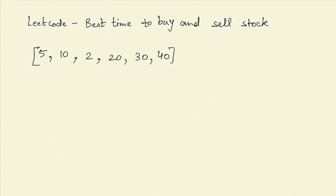Hi everyone, today we are going to discuss the LeetCode problem: Best Time to Buy and Sell Stock. Given an array of numbers representing the price of a stock every day, we have to find the maximum profit by buying and selling a stock if we are allowed a maximum of K transactions.